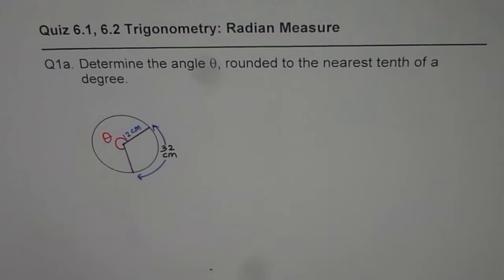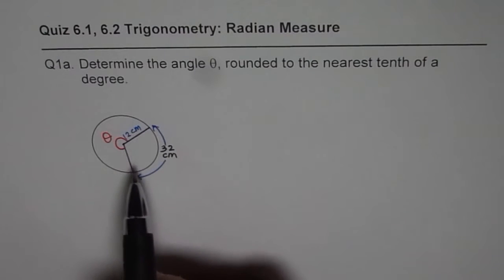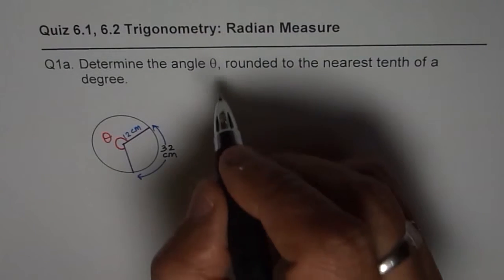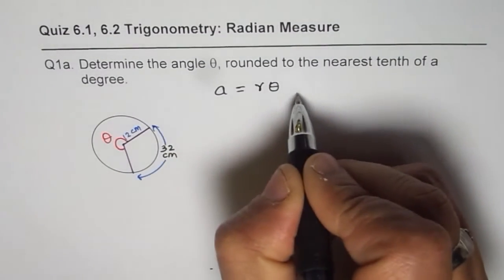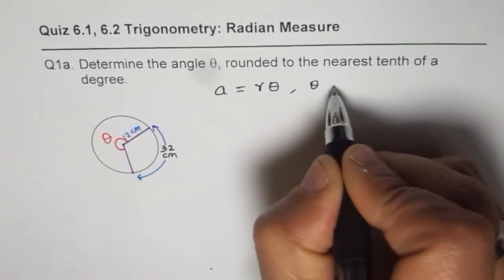To answer questions related to arc length, radius and theta, we should always work with the relation a equals r theta. Remember that theta should be in radians.